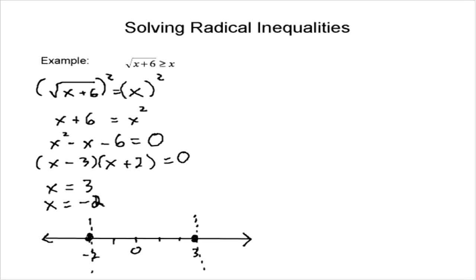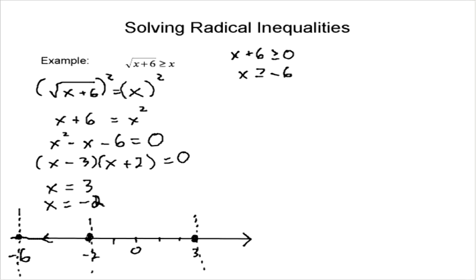For a radical inequality, there's one thing we have to keep in mind: the domain of this function. The domain is determined by what's underneath the radical in our original inequality. The domain tells us that x plus 6 has to be greater than or equal to 0 — remember, we can't have a negative value under the radical. So that tells us x has to be greater than or equal to negative 6. On our number line, if we extend it, we actually have a number line that stops — it doesn't go on forever. It goes only to negative 6, and that's another boundary.